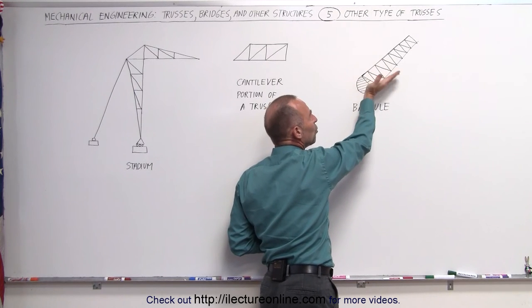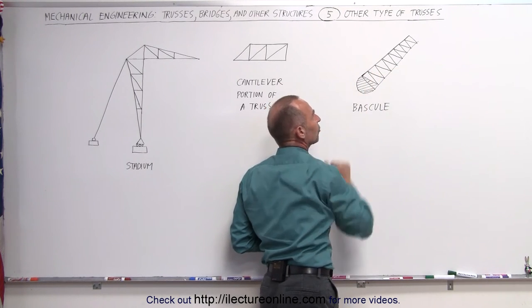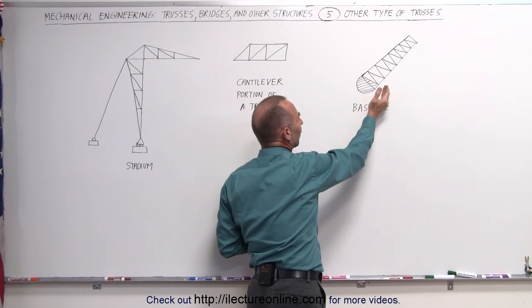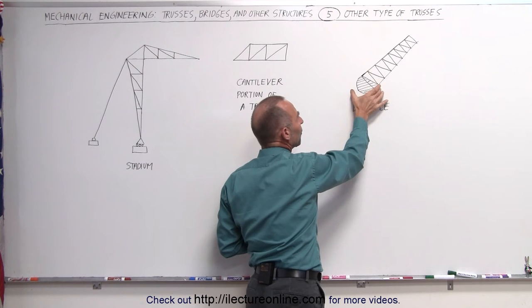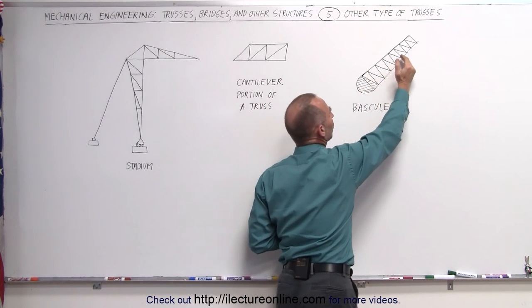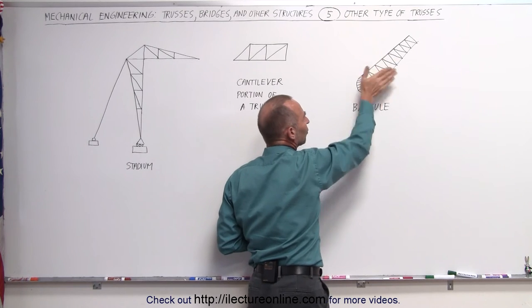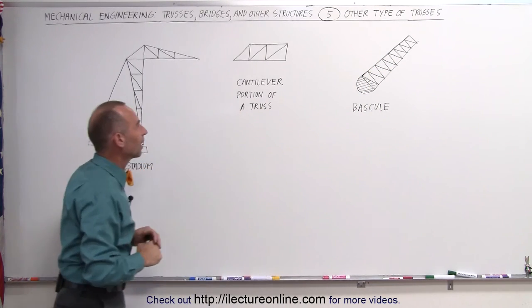So this could be used in a moving bridge, for example, moving bridge support. Notice that the center of mass is very close to this very large heavy weight at the bottom. Now we have this strong structure that allows the cantilever, the movement of the bridge in the various direction like that.